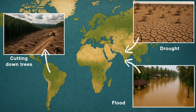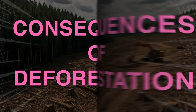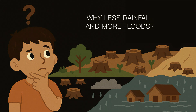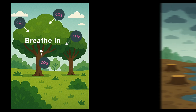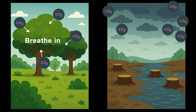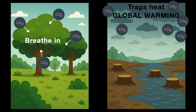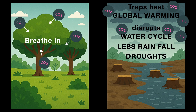Remember what I said at the beginning: cutting trees in one place can lead to flood or drought somewhere else. Let's find out what actually happens — why some places get less rainfall and others face floods, all because of deforestation. Trees breathe in carbon dioxide for photosynthesis. Fewer trees means more carbon dioxide in the air, which traps heat, leading to global warming — the overall temperature of the earth's atmosphere increases. And that messes up the water cycle, causing less rainfall and sometimes even droughts.